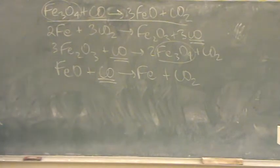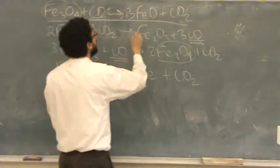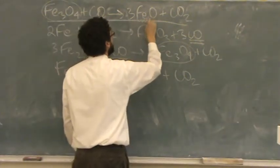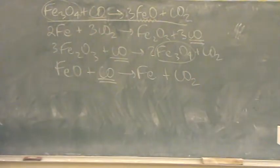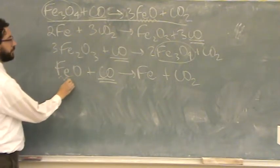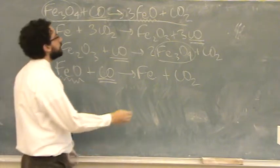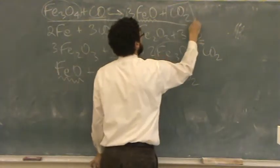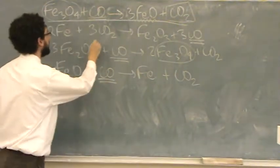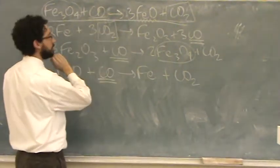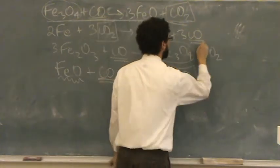I've also got the FeO. I'll put a squiggly underline under the FeO. Oh, and that's, I guess, only here. And then I've got the CO2. I'll put a box around the CO2. And that's here, and here, and here.